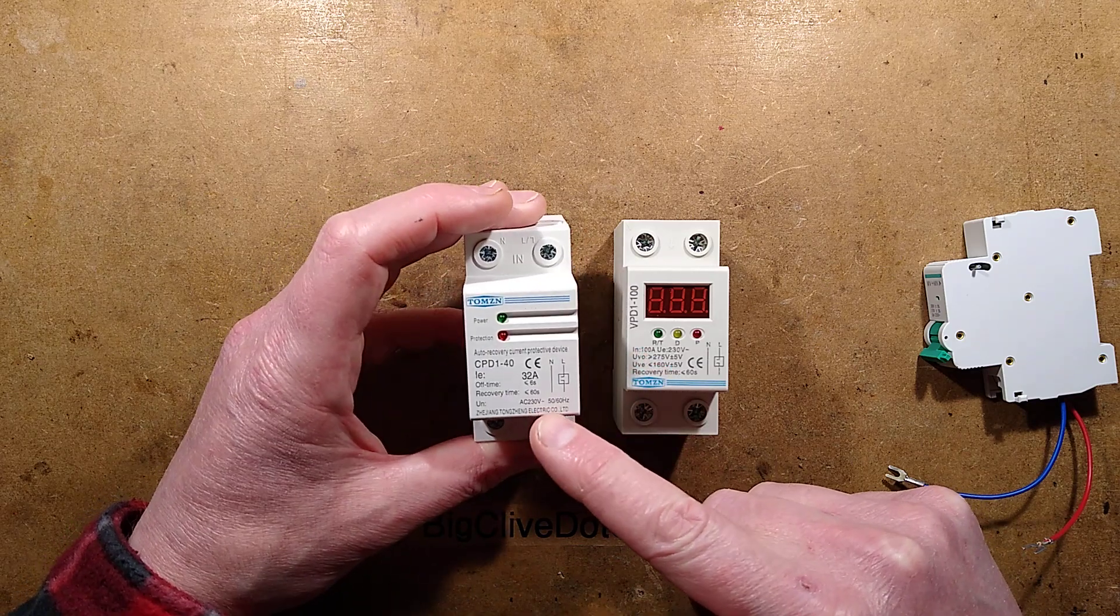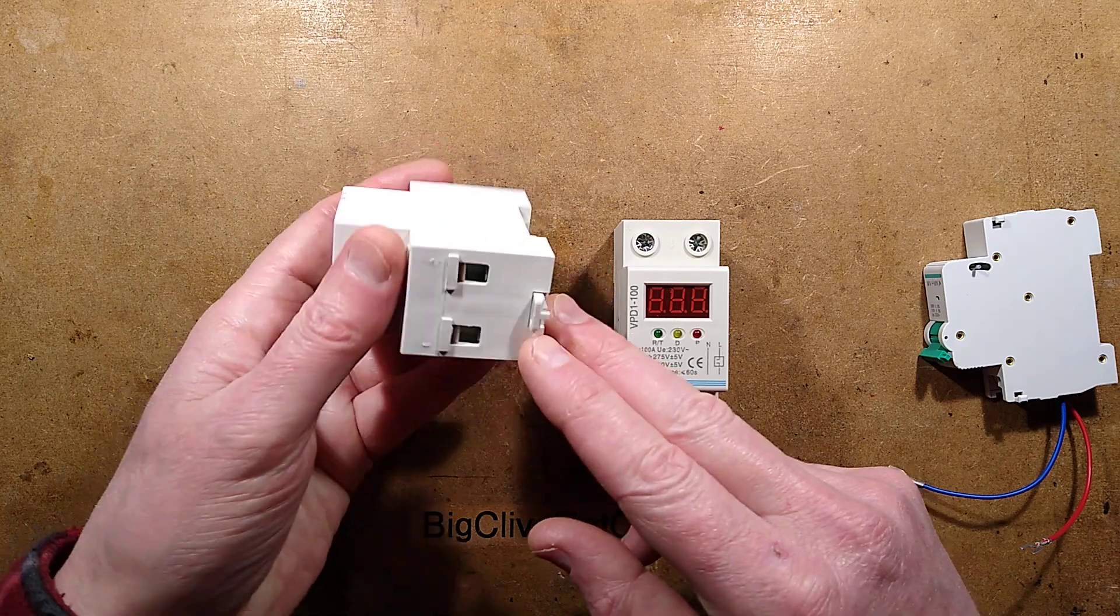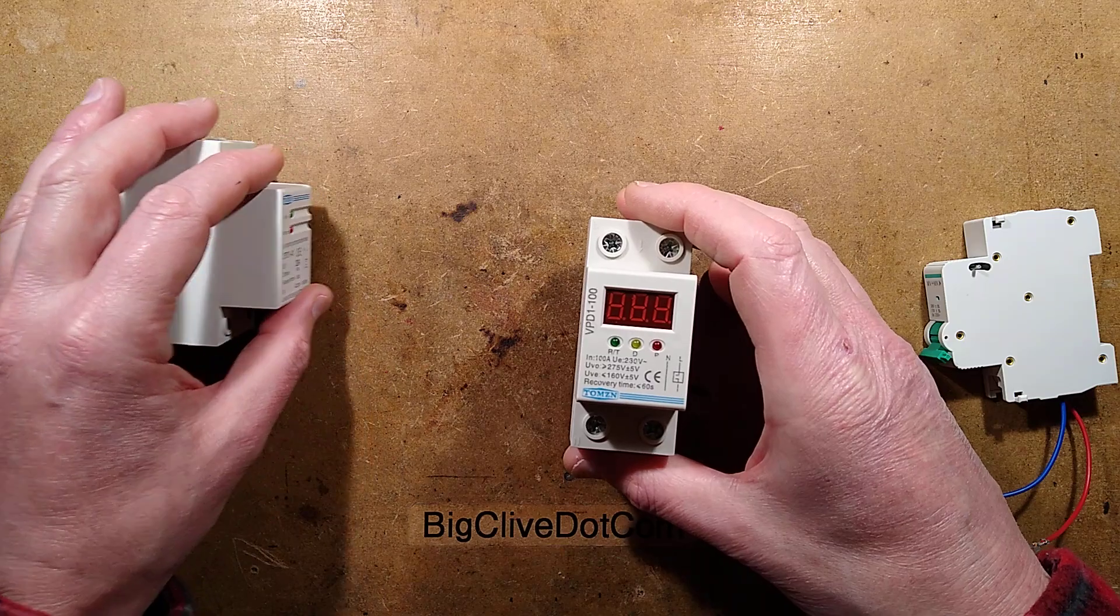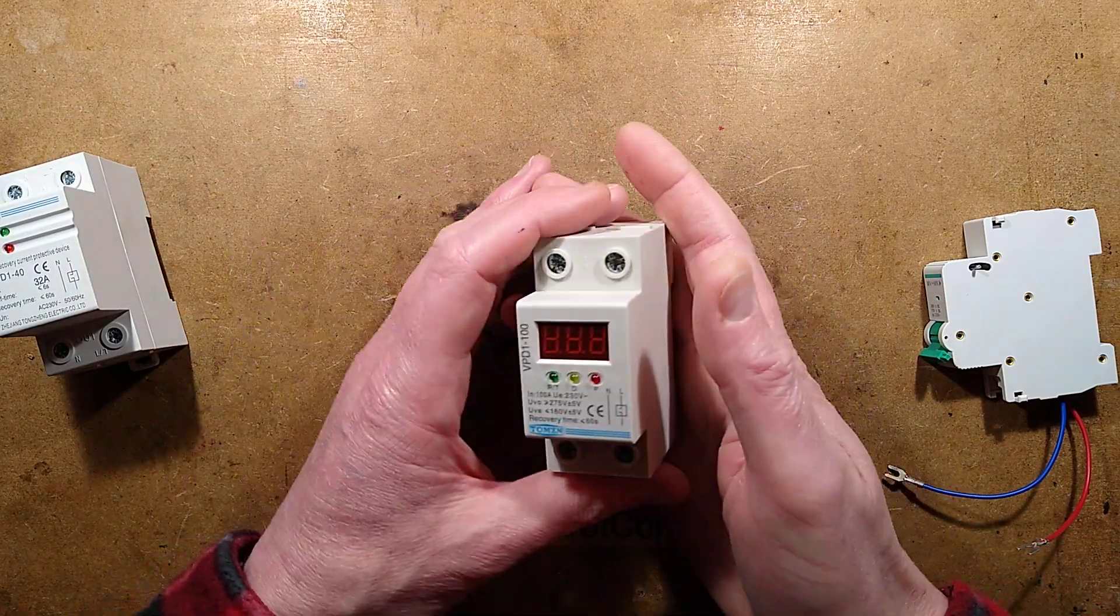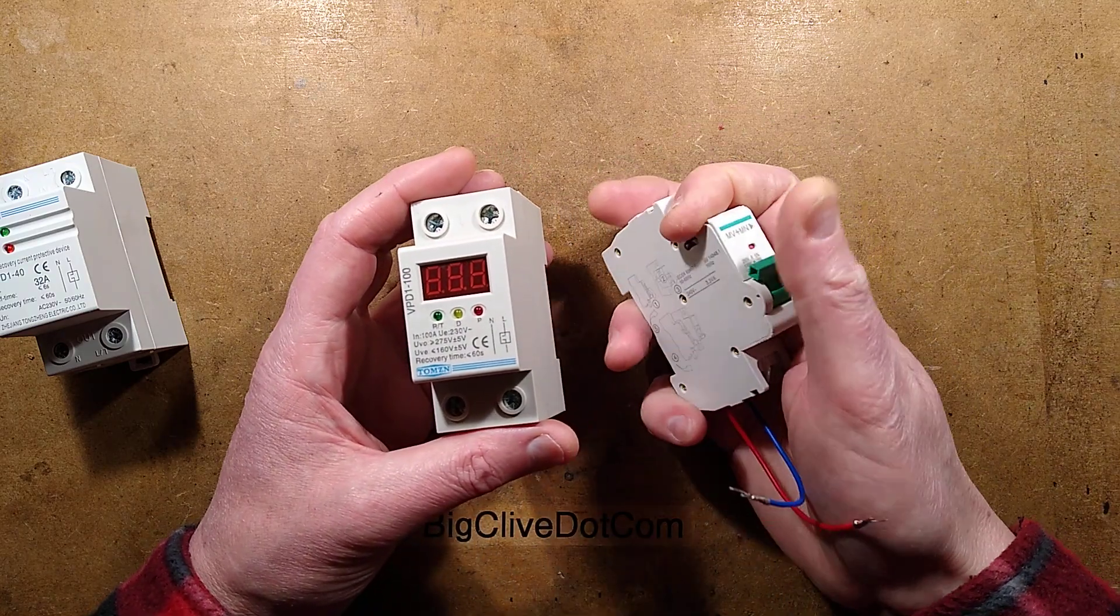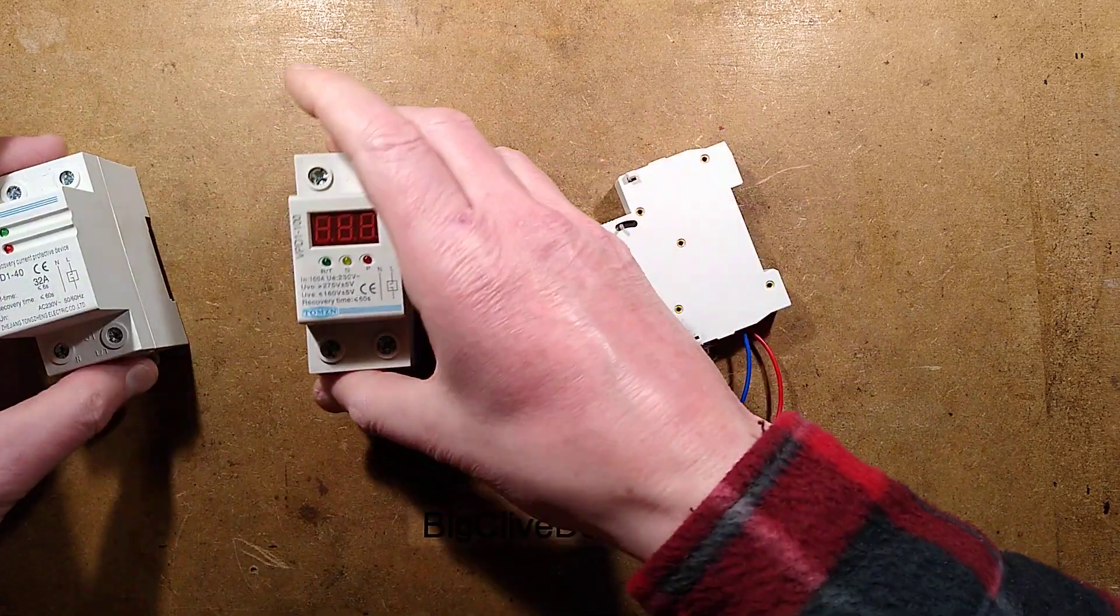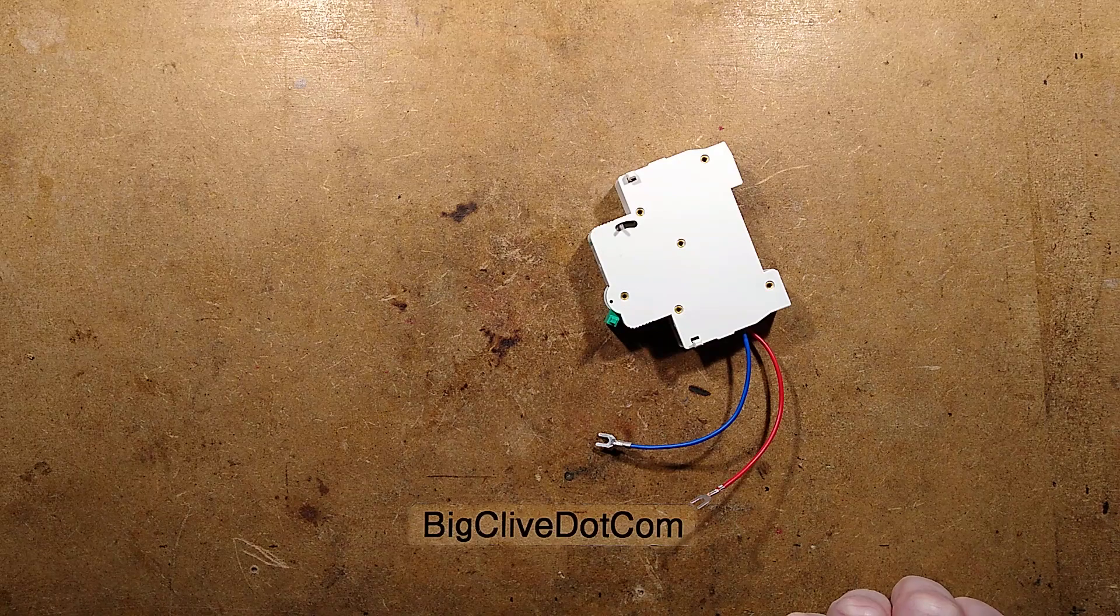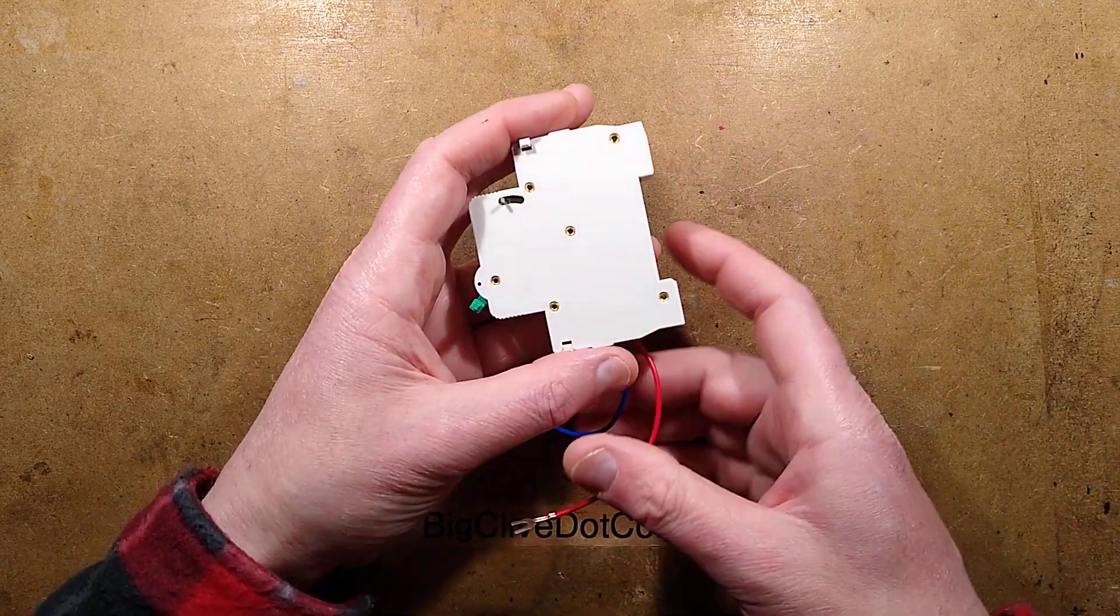The options you have here - this one is 32 amp with ingoing and outgoing terminals and probably a fairly high current relay. This one claims to be 100 amps and feels hefty, probably has a contactor in it. But this one, because it's designed to trip the breaker next to it, is really really light. I'll take a look at these ones some other time.